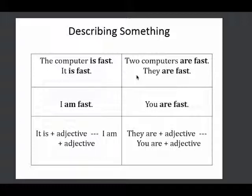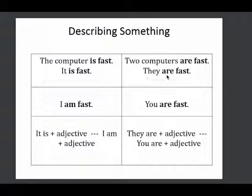Two computers are fast. They are fast. Notice the noun is plural, so we make the verb plural and we use are. Same with the pronoun, they — we use the verb are fast.